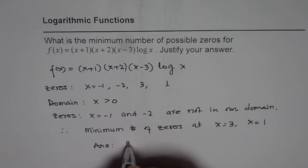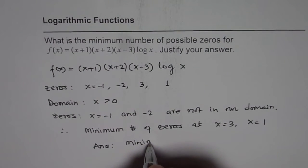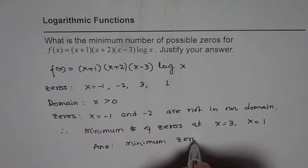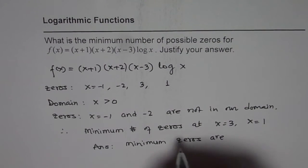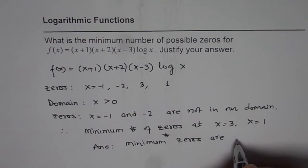Therefore, our answer is that the minimum number of zeros are 2.